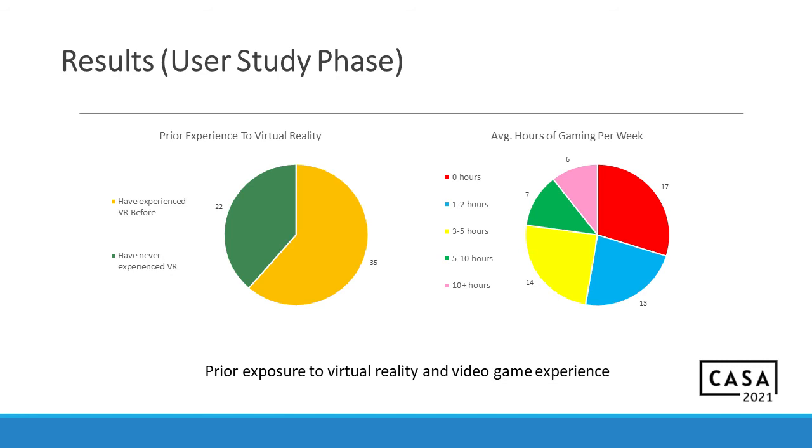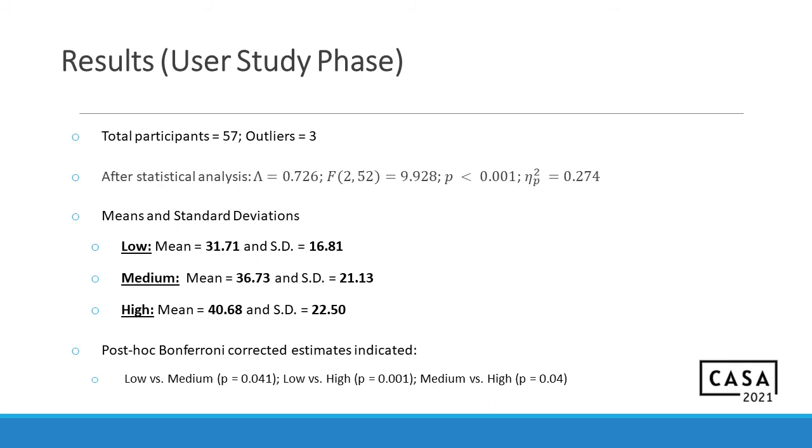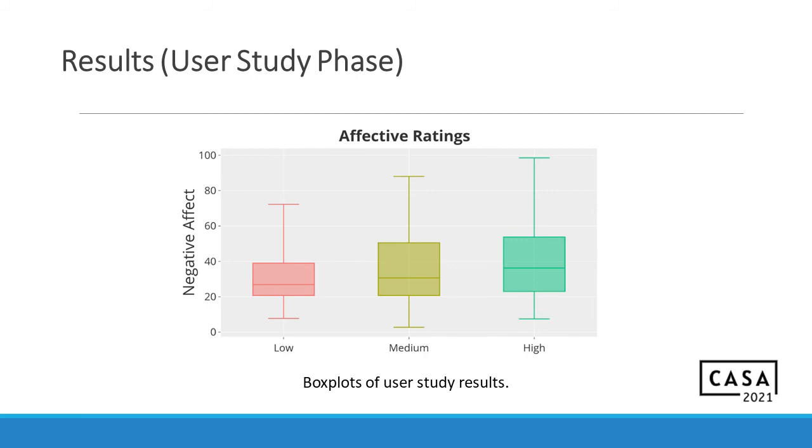Here are some results for the demographics. There were quite a number of people who had experienced VR, but there were also people who didn't experience VR. And also here is a breakdown of average number of gaming, average hours of gaming that people did. And finally, here are the results for our user study phase. We had total number of participants were 57. And out of those, there were three outliers. And here are the values for the statistical analysis. And finally, the means and standard deviations. The low condition achieved a mean of 31.71, medium of 36.73, and a high of 40.68. And also, there were post hoc Bonferroni correlations that were being estimated.